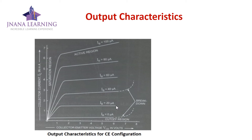That covers the active region. In the saturation region, for low values of VCE, the base current IB does not cause a change in IC. In the cutoff region, a small amount of collector current flows even when the base current is equal to zero — this is the leakage current. The transistor is in cutoff mode in that region.